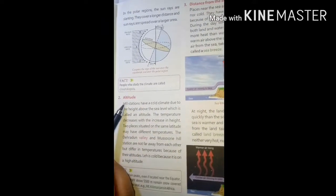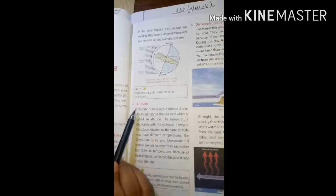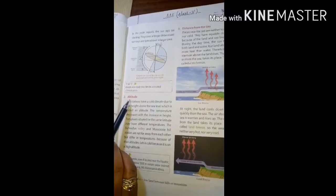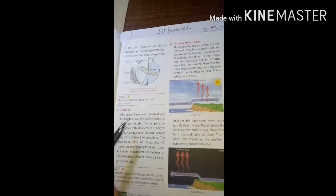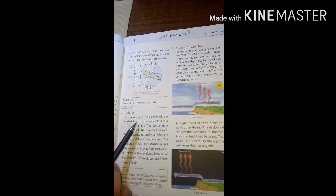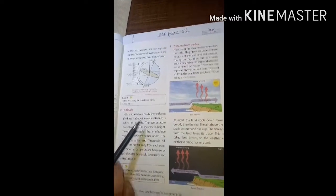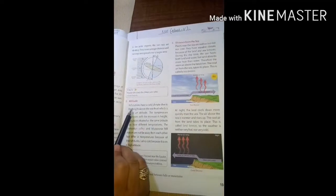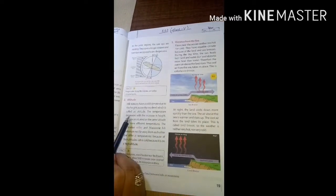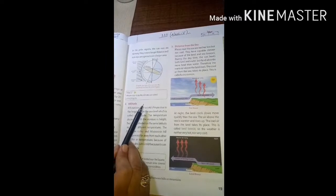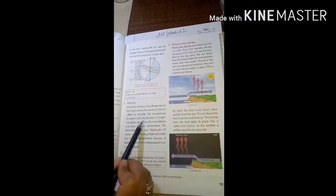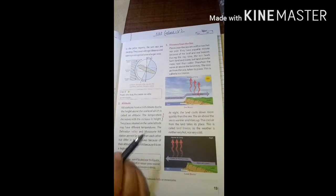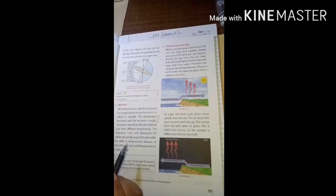Next is altitude. You need to remember one concept of altitude. The higher above the sea level you go, the colder it gets. This is because, the higher you go, the thinner the air is. Therefore, there is less air to trap the heat and the air is colder. Hill stations have cold climate due to the height above the sea level which is called altitude. The temperature decreases with increase in height. This is very important. As you go up, the temperature comes down.